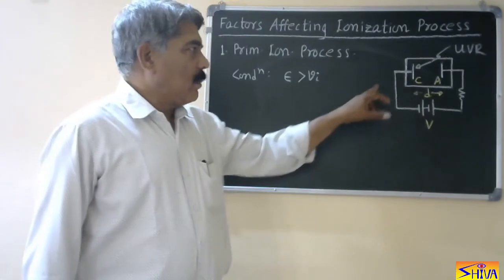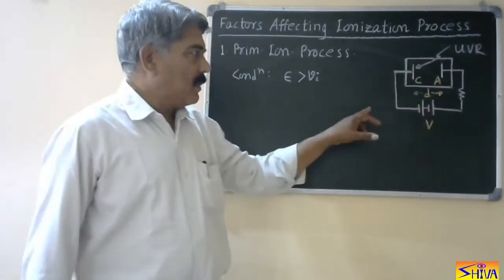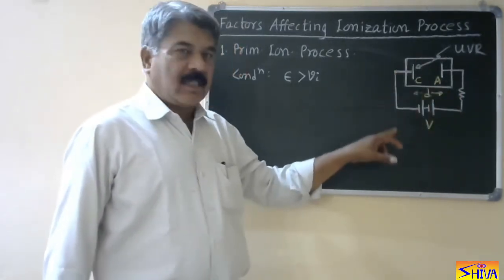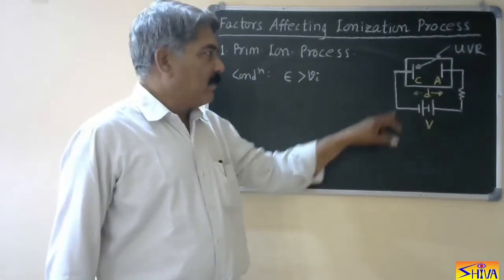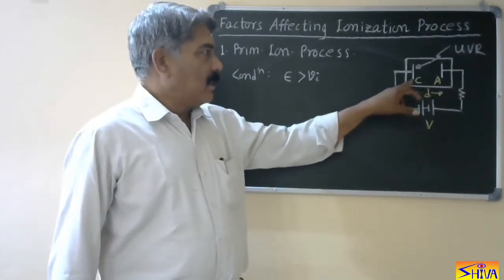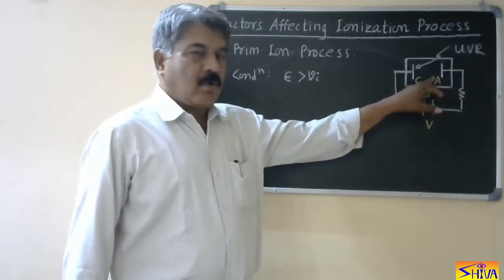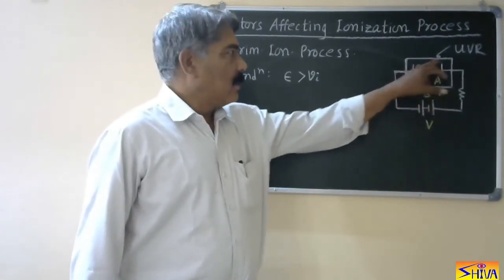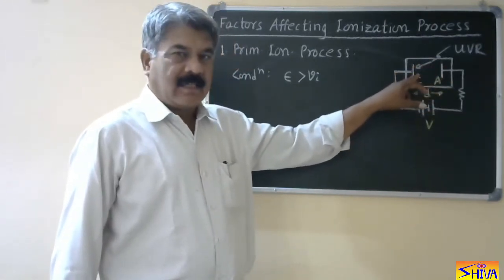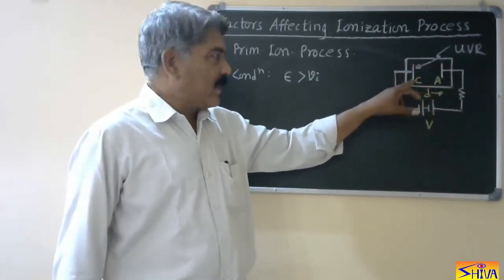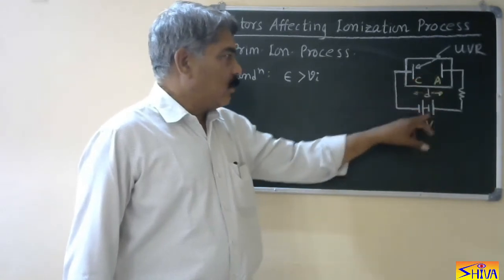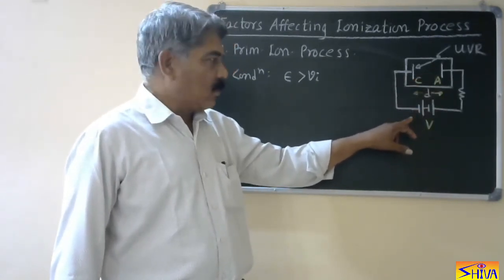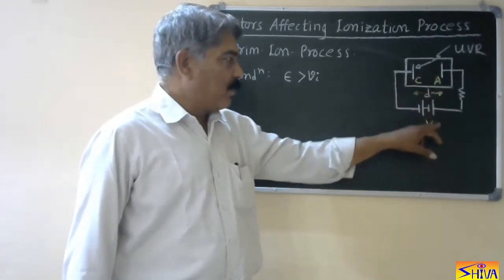Let us recall the Townsend's experiment. In Townsend's experiment, there is a chamber with two electrodes — cathode and anode. In this chamber, there is gas at low pressure and it is connected to a DC voltage source having potential V.